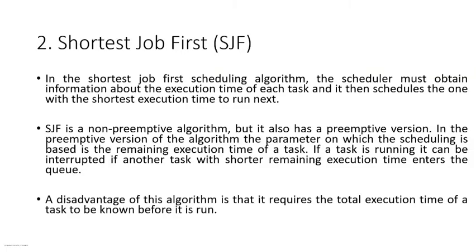The next type of algorithm is the Shortest Job First algorithm, or SJF. This is again a non-preemptive type of algorithm. In this algorithm, the scheduler must obtain information about the execution time of each task. Whichever task has the shortest execution time is scheduled first. The disadvantage of this algorithm is that it requires the total execution time of a task to be known before it is run.